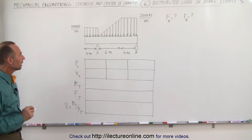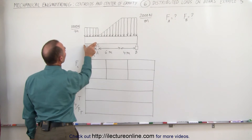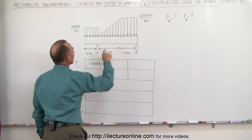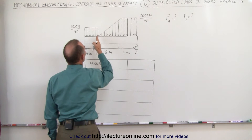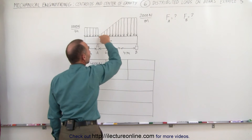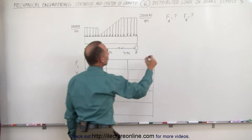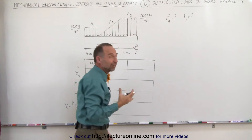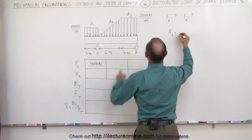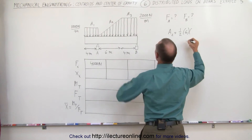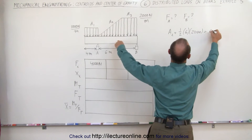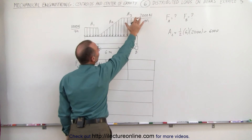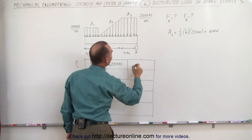1,000 newtons per meter over a distance of 4 meters gives a total load of 4,000 newtons. Here we have a varying load going from 0 to 2,000 newtons per meter over a distance of 6 meters — that's a triangular shape. So this is Area 1, Area 2, and Area 3. Area 2 is equal to one-half times the base of 6 meters times the height of 2,000 newtons per meter, which equals 6,000 newtons. The last segment is 2,000 newtons per meter for 4 meters, giving a total of 8,000 newtons.